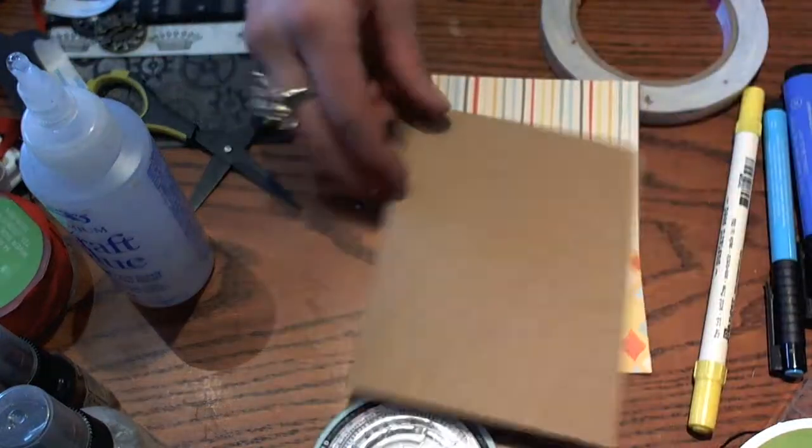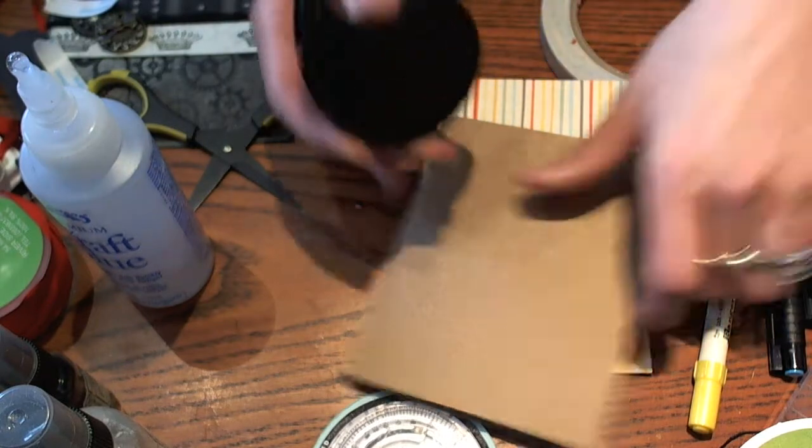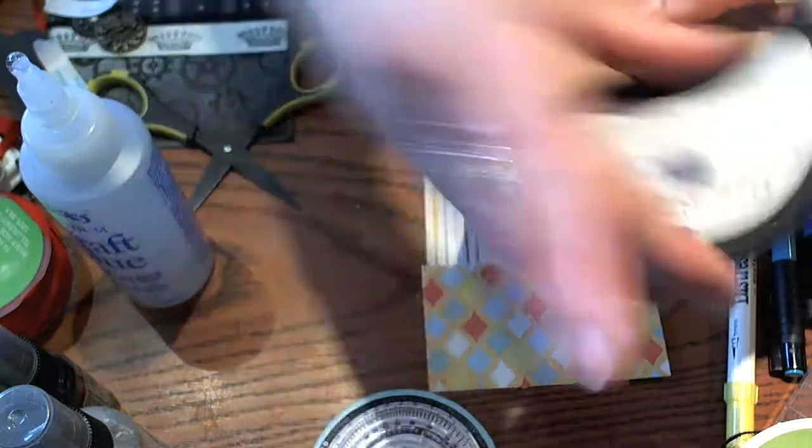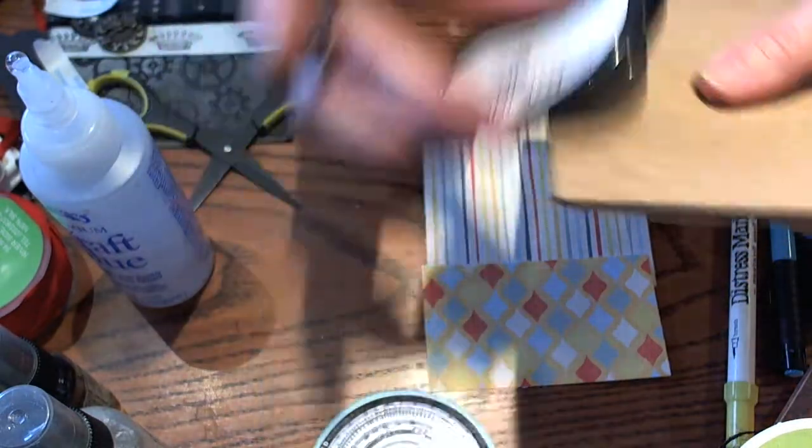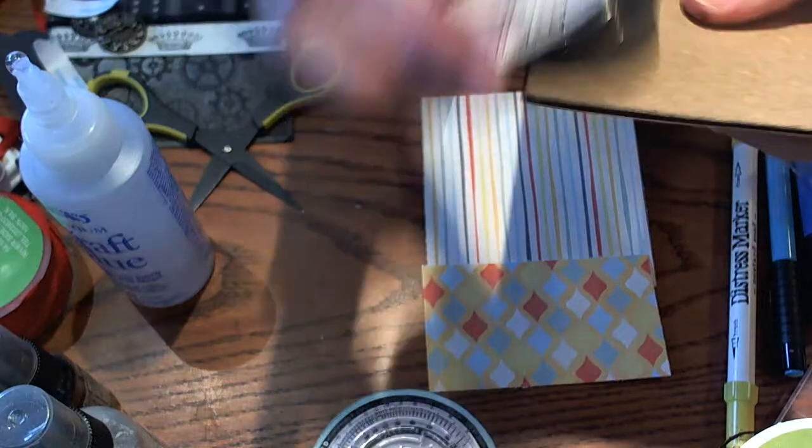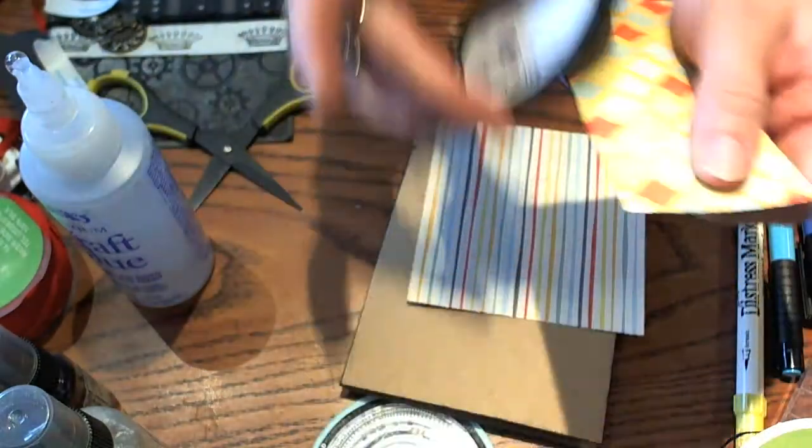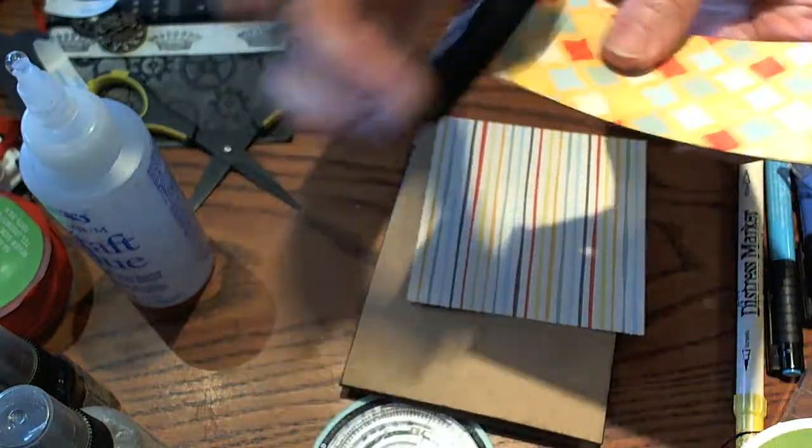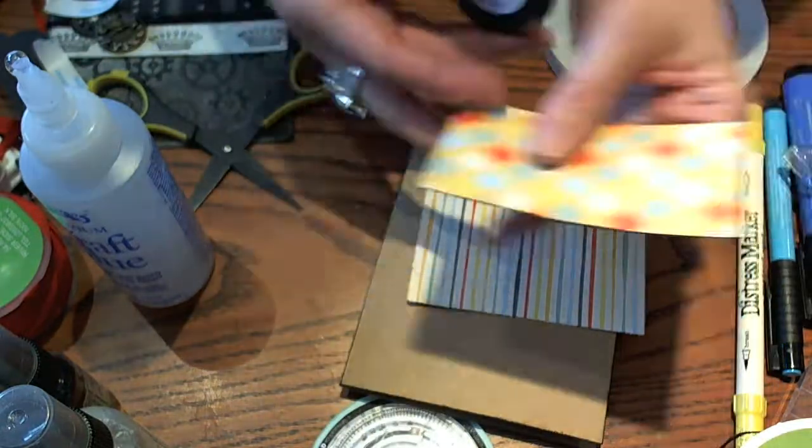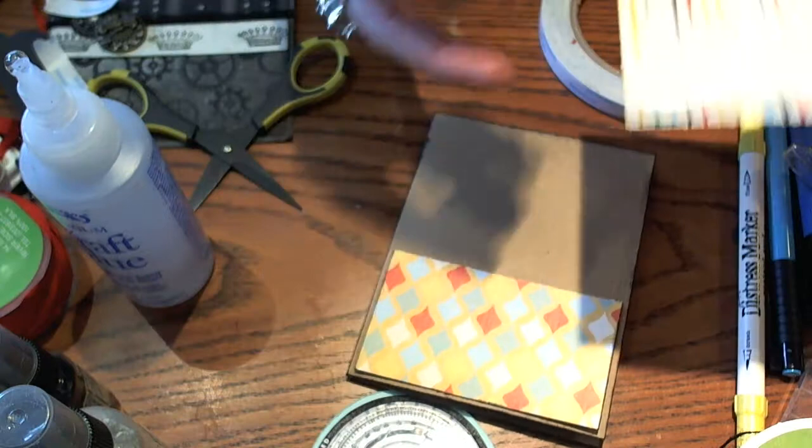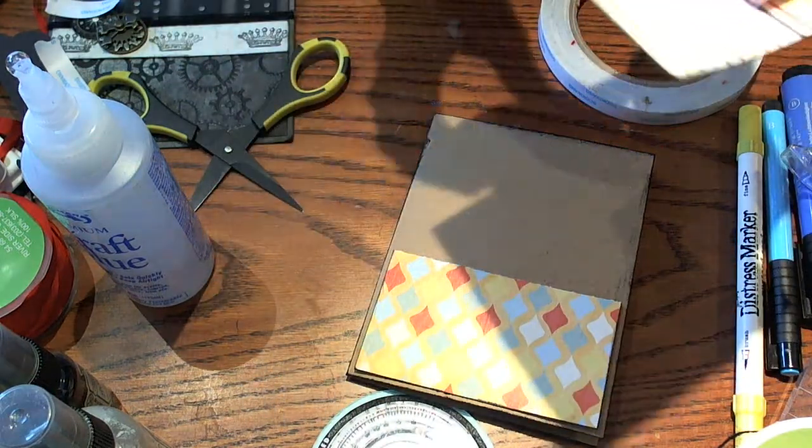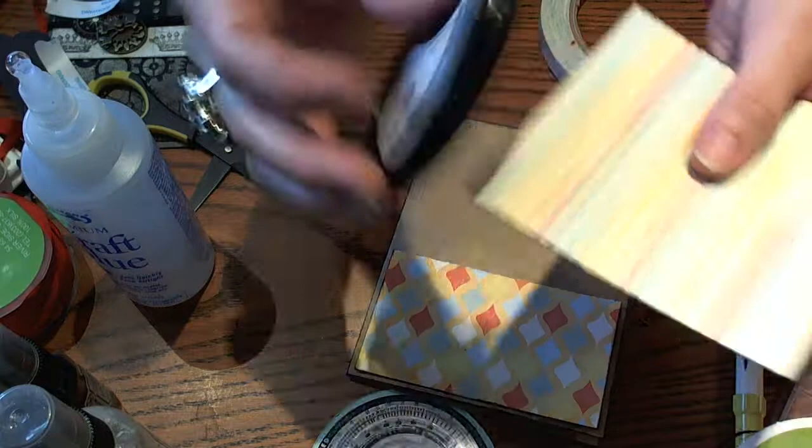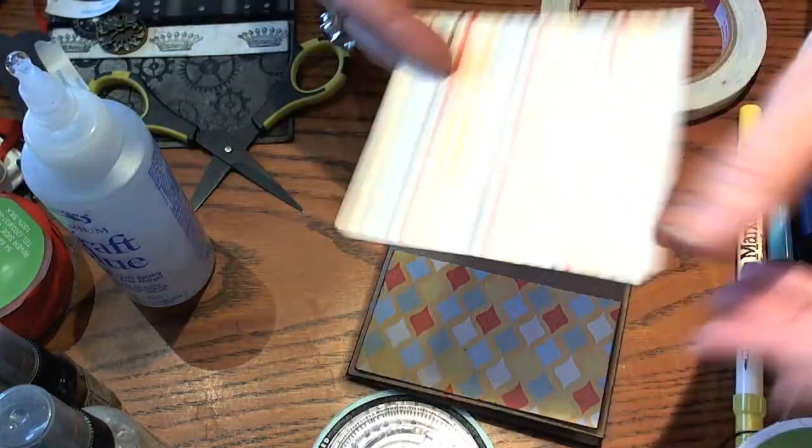And then we're starting with an A2 size card base. I'm going to go ahead and ink my edges here. And then I've cut two pieces of pattern paper from the My Mind's Eye, the same My Mind's Eye collection. We're just going to attach these right to the front of our card. I've cut a piece at 2.5 inches by 3.25 inches wide. And then we're going to attach this piece, which is 3.75 by 3.75.